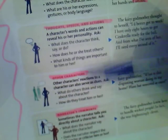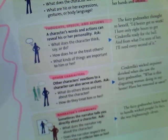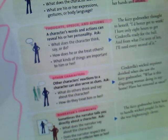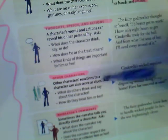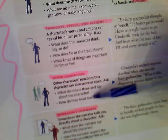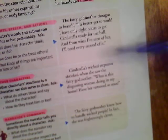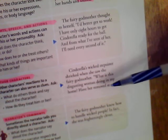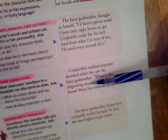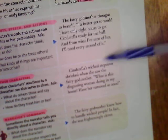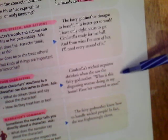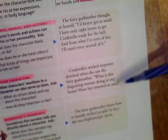The third method is other characters. Other characters' reactions to a character can also serve as clues. Ask: what do the others think and say about the character, and how do they treat him or her? From Cinderella: 'Cinderella's wicked stepsister shrieked when she saw the fairy godmother — What is this disgusting woman doing in my home? Have her removed at once!' Based on the characters' reactions, we can see that the fairy godmother is not concerned about rules right now — she is focused on getting her job done.